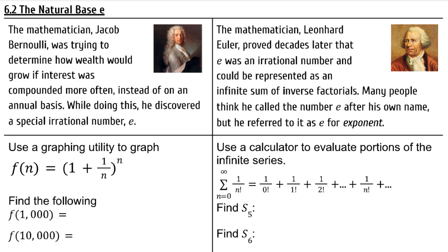The mathematician Leonard Euler proved decades later that e was an irrational number and could be represented as an infinite sum of inverse factorials. Many people think he called the number e after his own name, but the most likely speculation is that he referred to it as e for exponent.